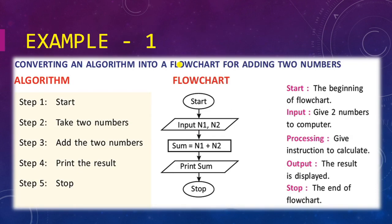Here's an example converting an algorithm into a flowchart for adding two numbers. Start becomes an oval because for start we use the oval shape. Take two numbers means we are taking from the user, we are inputting. For input and output we use a parallelogram. They have named the variables n1 and n2. They are adding two numbers using a third variable called sum.